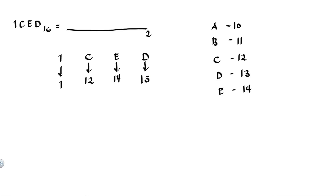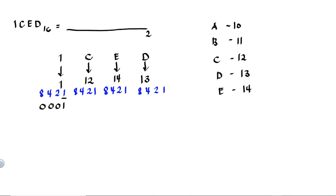E corresponds to 14, and D is equivalent to 13. Then we set up the binary place values starting from right to left: 1, 2, 4, and 8 for each character. 1 is just 1, so it is equivalent to 1 and the rest are 0's. So 1 is equivalent to 0, 0, 0, 1.